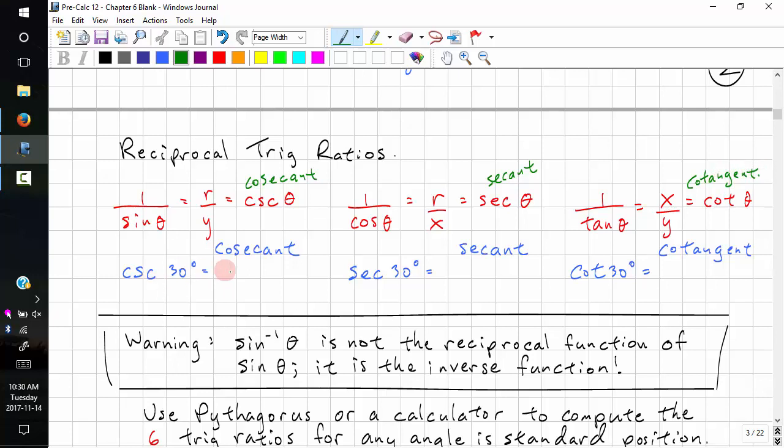If we know sine theta is 1 half, reciprocal, 1 over 2, that's 2. Secant theta, 1 over cos theta. Cos 30 is root 3 over 2, so this is 2 over root 3.